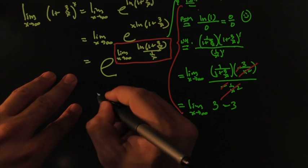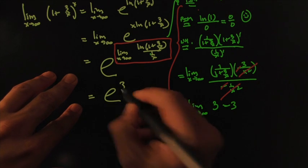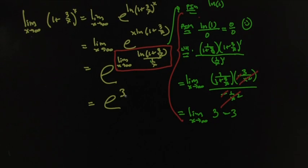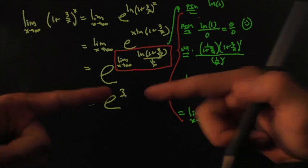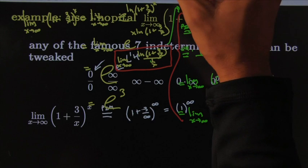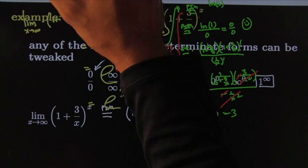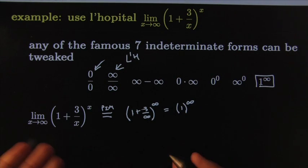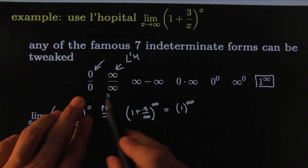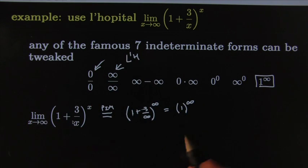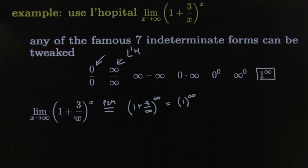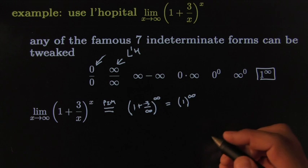Switching back to yellow, this becomes e to the 3. The promise was that every one of these famous indeterminate forms can be tweaked into a form you can work with — I hope you believe me by now. If not, come back for another example. See you guys next time.